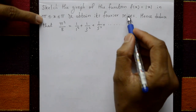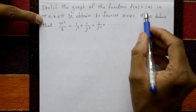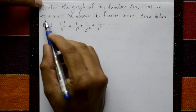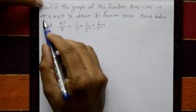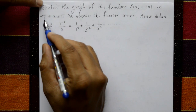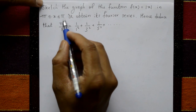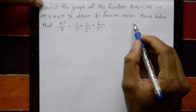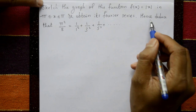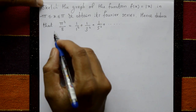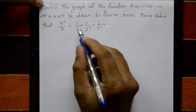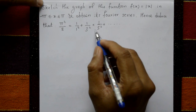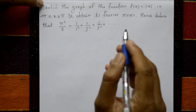Sketch the graph of the function f(x) = |x| in the interval -π ≤ x ≤ π and obtain its Fourier series. Hence deduce that π²/8 = 1/1² + 1/3² + 1/5² + so on.